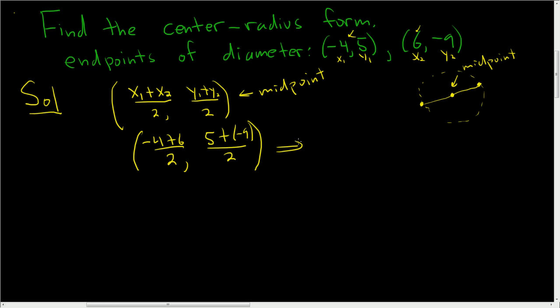So this ends up being, let's see, -4 plus 6 is 2, 2 over 2 is 1. This is -4 over 2, which is -2. So this here will be our center.